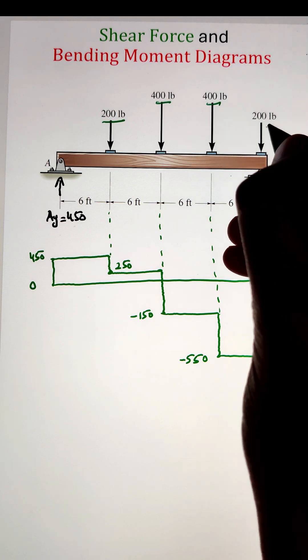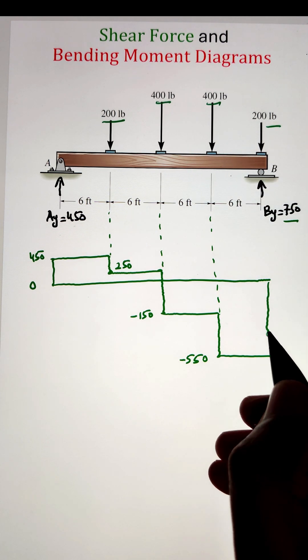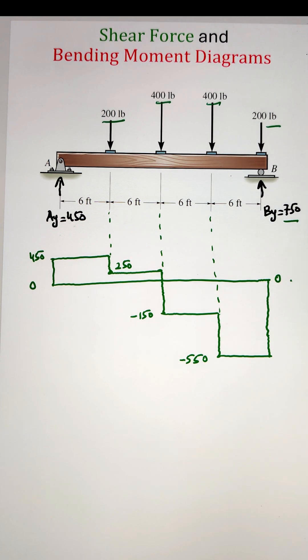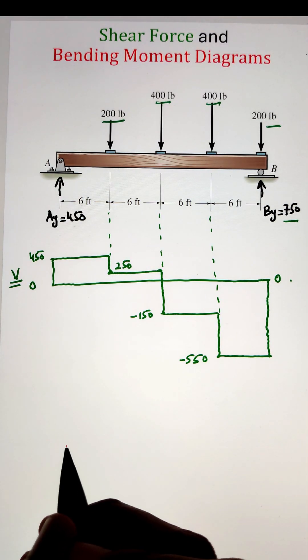Finally, at point B, there is a force of 750 going in the upward direction and 200 pounds going in the downward direction. The resultant force is 550 pounds going in the upward direction. Next, we can draw the bending moment diagram utilizing the area under the curves of the shear force diagram.